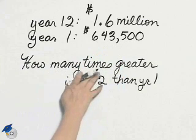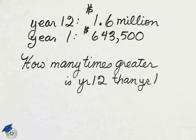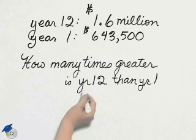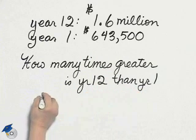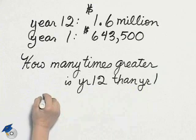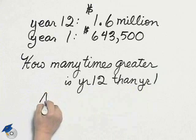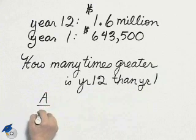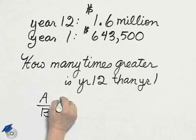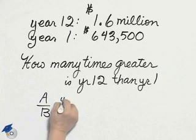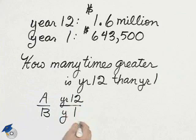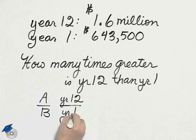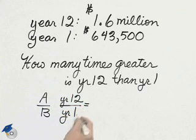The phrase 'how many times greater is year 12 than year 1' can be written as a fraction with the number from year 12 in the numerator and the number from year 1 in the denominator.